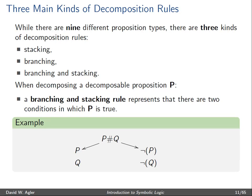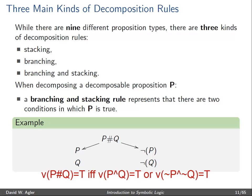Lastly, a branching and stacking rule represents that there are two conditions in which P is true. Essentially this is just a combination of the branching and stacking rule. So if we take a look at the example P hash Q, we see that P hash Q is true if either P is true and Q is true, or if not P is true and not Q is true.